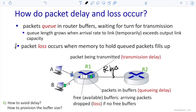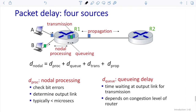If A and B continuously send packets to router R1, eventually the queue in R1's buffer will be filled up. If any additional packet comes from A or B and tries to enter the buffer but there's no empty slot, R1 will drop that packet — causing packet loss. That is the reason why we have delay and loss. If we analyze it more deeply, there are four different types, or four sources, of packet delay.